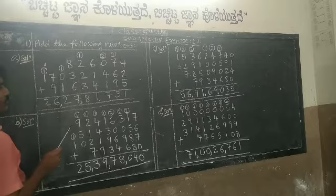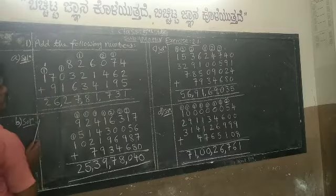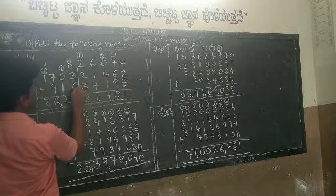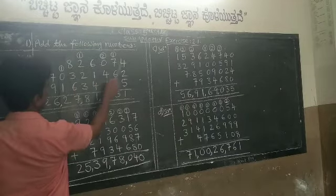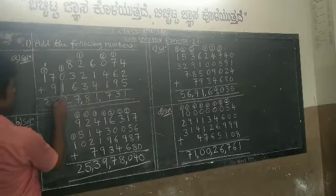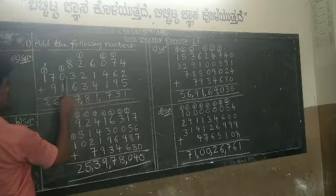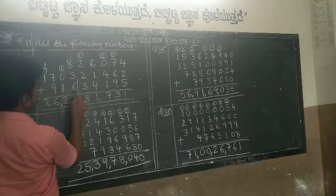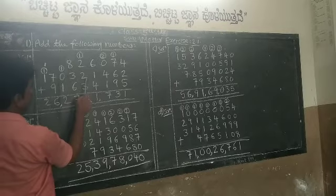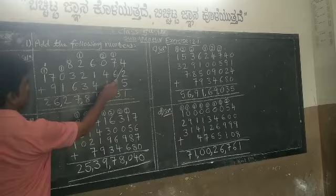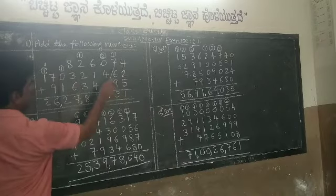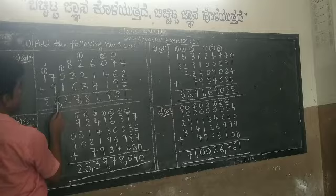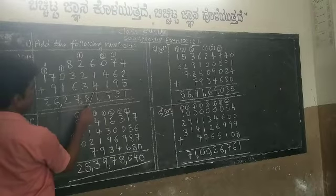Look at the reader and write the question. The first number given is 8 lakhs 26,074. The second number is 17 crores 3 lakhs 21,462. According to place value, write the digits one below the other. The third number is 9 crores 16,34,195.